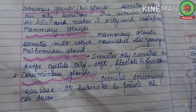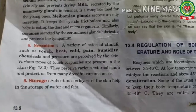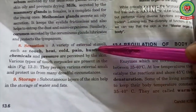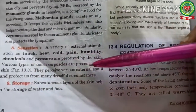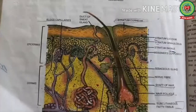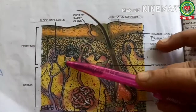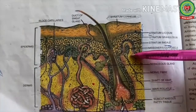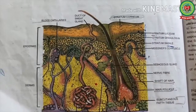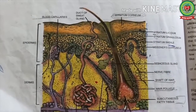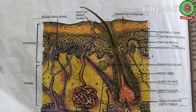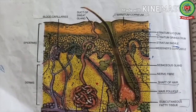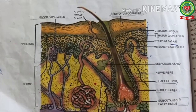The next function of skin is sensation. A variety of stimuli such as touch, heat, cold, pain, humidity, chemicals, and pressure are perceived by the skin. The dermis portion contains many nerve fibers which make the skin sensitive to these stimuli, and through these sensations skin protects us from various dreadful circumstances.